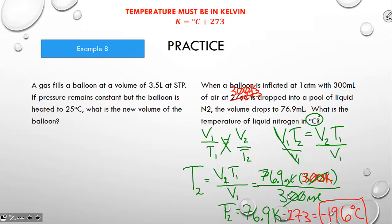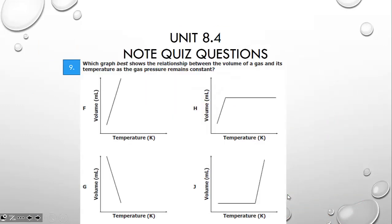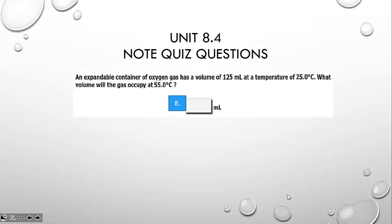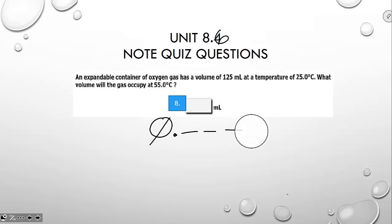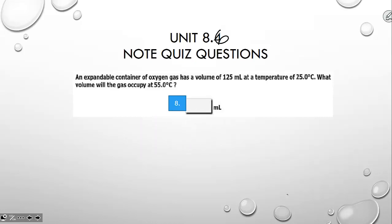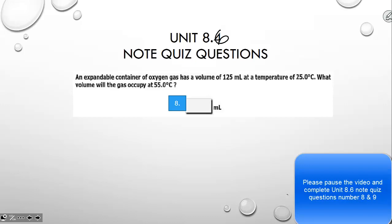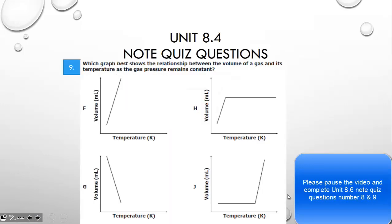Note quiz questions 8 and 9 are about Charles's Law. For number 8, fill in the blank for the new volume — give three significant figures; leading zeros don't count. So if your answer is 121.78 that would be 122, or if it's 0.135, your answer is 0.135. Pause the video and complete note quiz questions 8 and 9 for Unit 8.6.